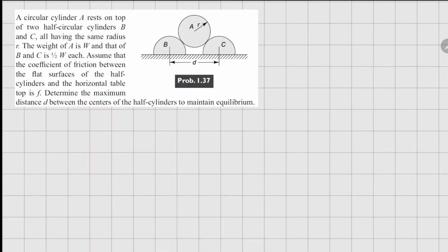This problem is 1.37. In this one we have these circular cylinders A, B and C. The weight for A is given as W and B and C here their weights are W over 2 and W over 2. Now in this we need to determine the maximum distance d between the centers of the half cylinders to maintain equilibrium.